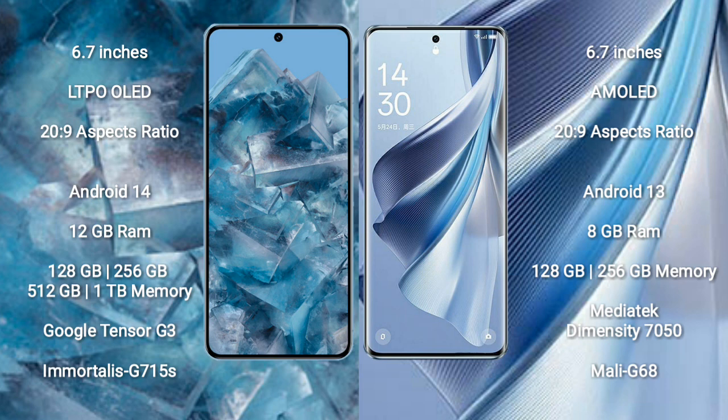The Google Pixel 8 Pro runs on the Android 14 operating system. The Oppo Reno 10 runs on the Android 13 operating system. The Google Pixel 8 Pro comes with 12GB RAM and 128GB, 256GB, 512GB, and 1TB internal storage, with the Google Tensor G3 processor and GPU.